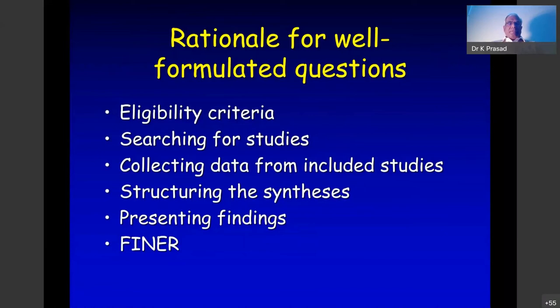When structuring your meta-analysis — as you will see when we show RevMan — it will ask you what the outcome is and what the comparison is. The intervention and comparison go there, and the outcome is something you have to write in the formulation of synthesis or meta-analysis before you start entering data. Once you have structured this, entering data will allow the software to automatically perform the meta-analysis.